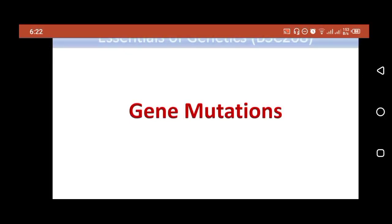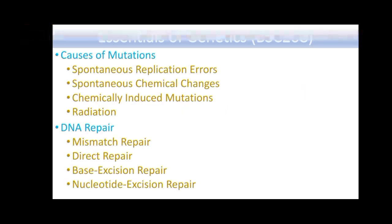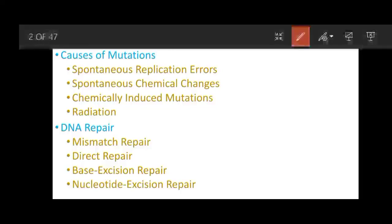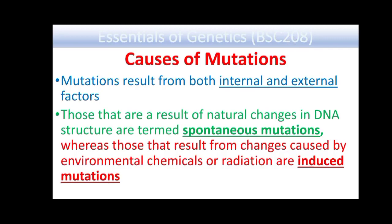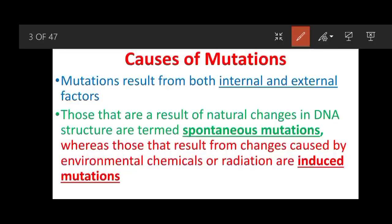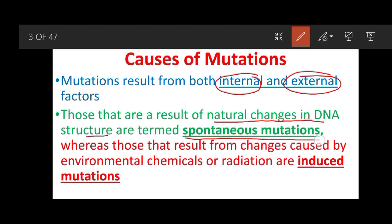Today we will be completing our topic on gene mutations. In today's lecture we will look at the causes of mutations as well as the DNA repair mechanisms used by cells to repair mutations. Mutations result from both internal and external factors. Those mutations that result from natural changes in DNA structure are known as spontaneous mutations, whereas those caused by environmental factors or radiation hazards are known as induced mutations.